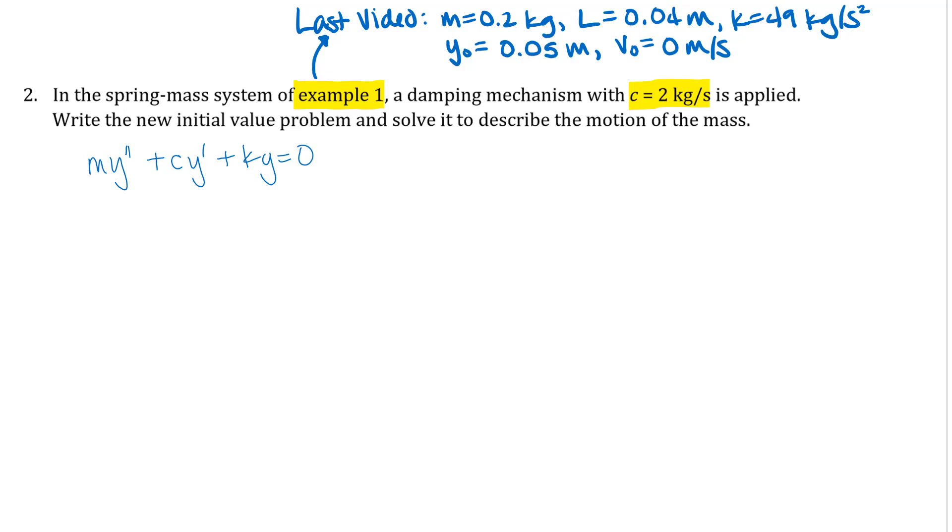So I'm just going to put my M, C, and K values that we were given in place there. And then I also have my initial position that was given, 0.05 meters, and initial velocity. Those were given in that last video.